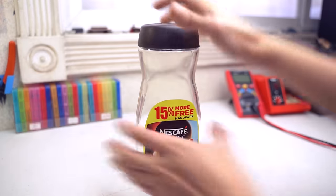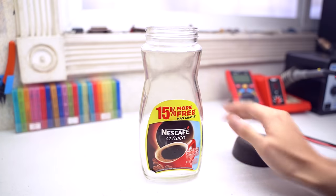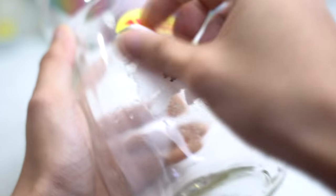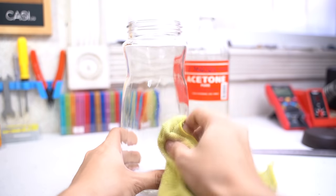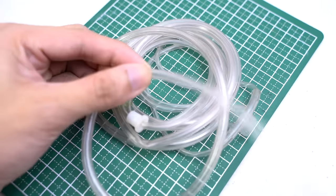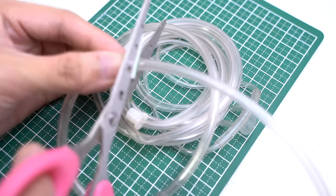For the container, I recycled a glass jar that used to contain coffee. To give your project a cleaner look, you might want to peel that label. Use a cloth and a few drops of pure acetone or hand wash alcohol to rub it off. You'll only need a short segment of tubing, so cut it using scissors.